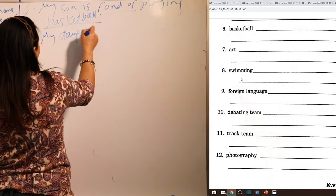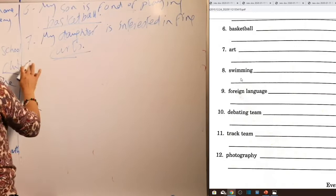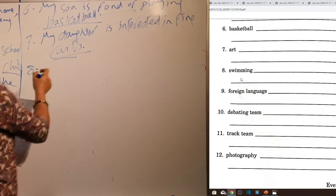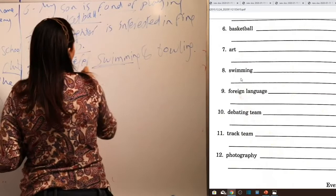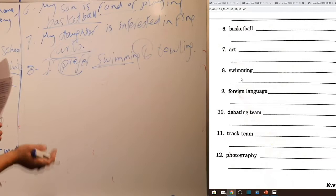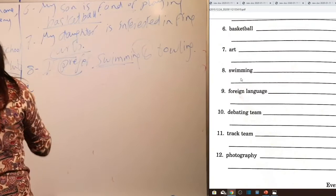Word seven — art: 'My daughter is interested in art' or 'in fine arts.' Word eight — swimming: 'I prefer swimming to bowling.' 'Prefer' always takes the preposition 'to' — the preferred thing comes first, then 'to,' then the less preferred thing. For example: 'I prefer reading to writing,' 'I prefer listening to music to watching TV.' Word nine — foreign language: 'I'm interested in learning a new foreign language.' Note that 'foreign' has a silent 'g.' After 'interested in,' the verb takes the -ing form.